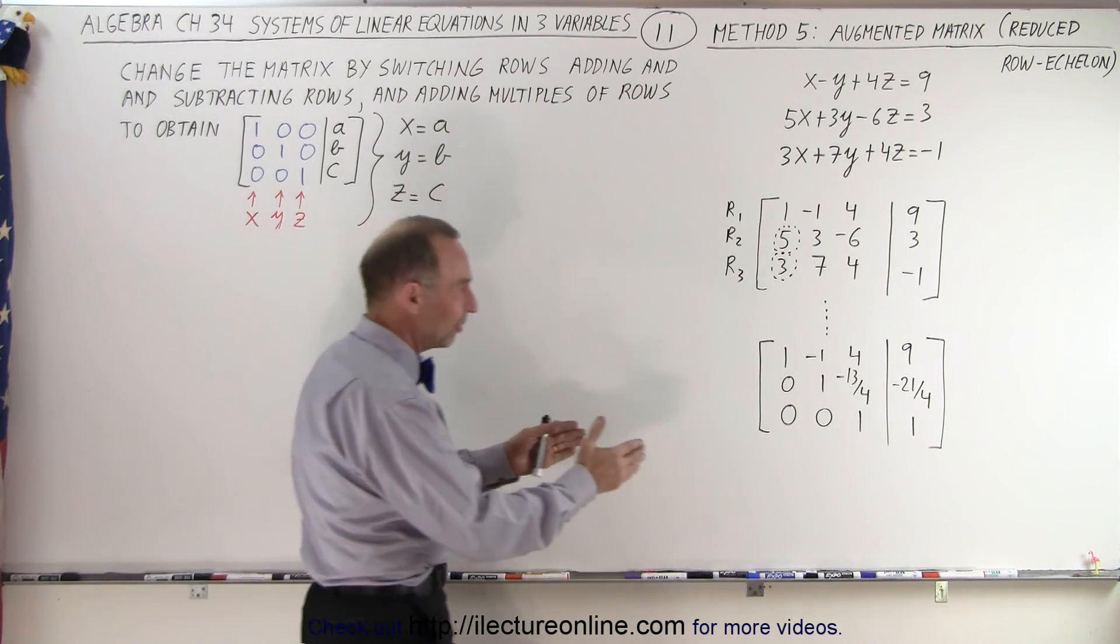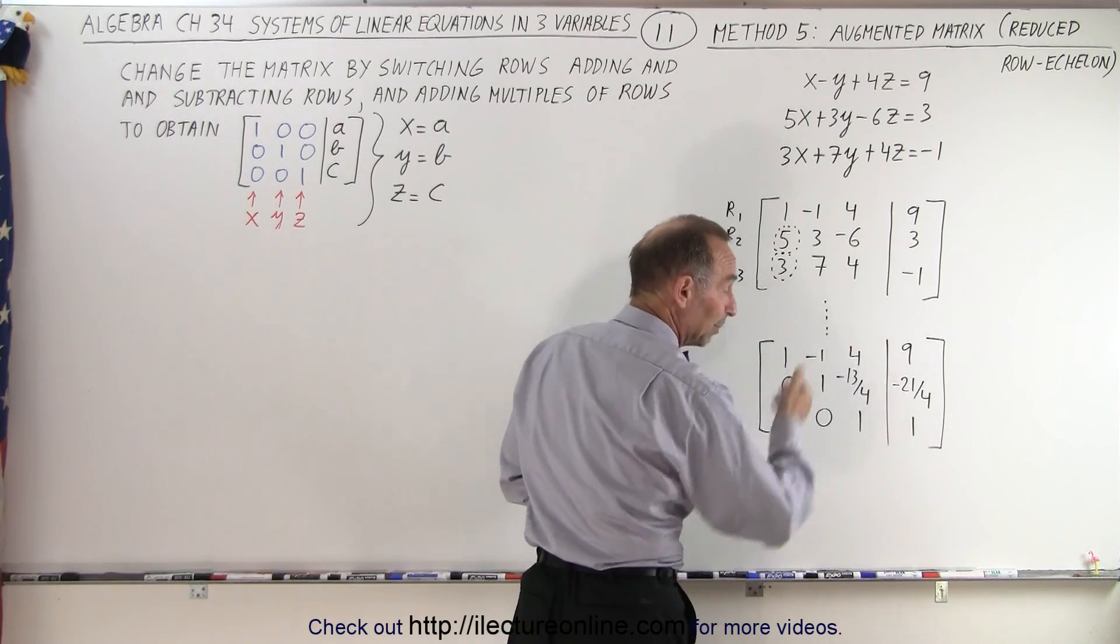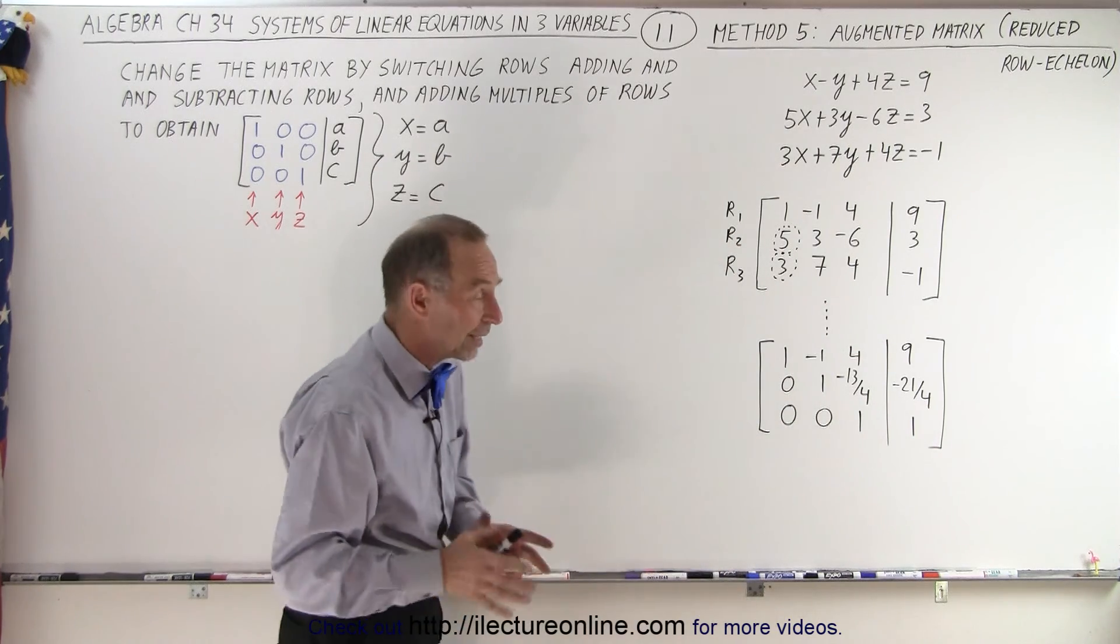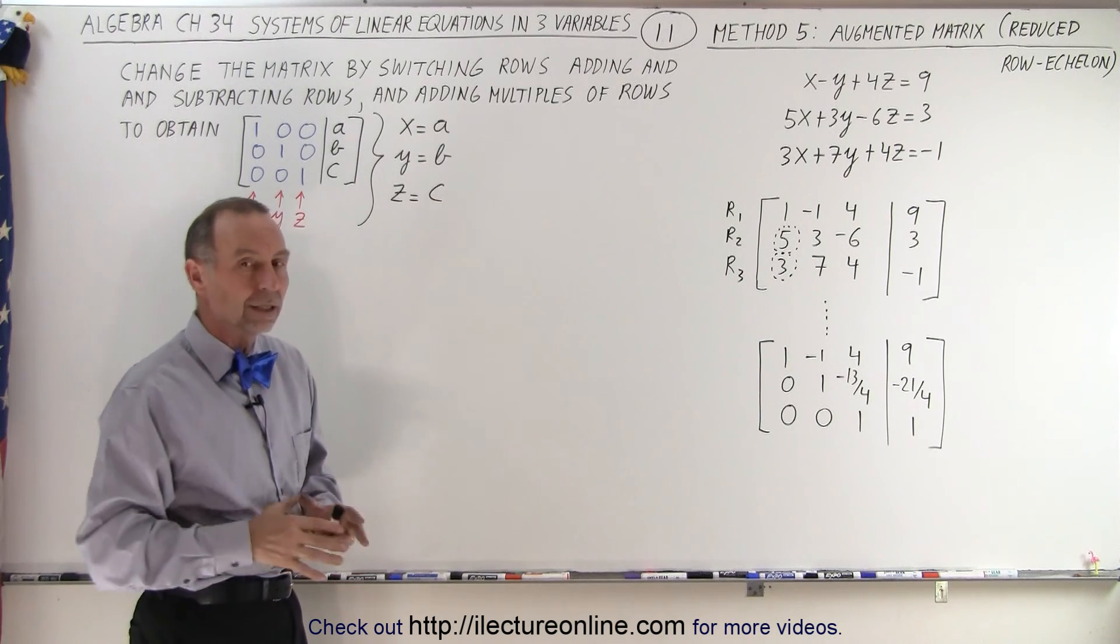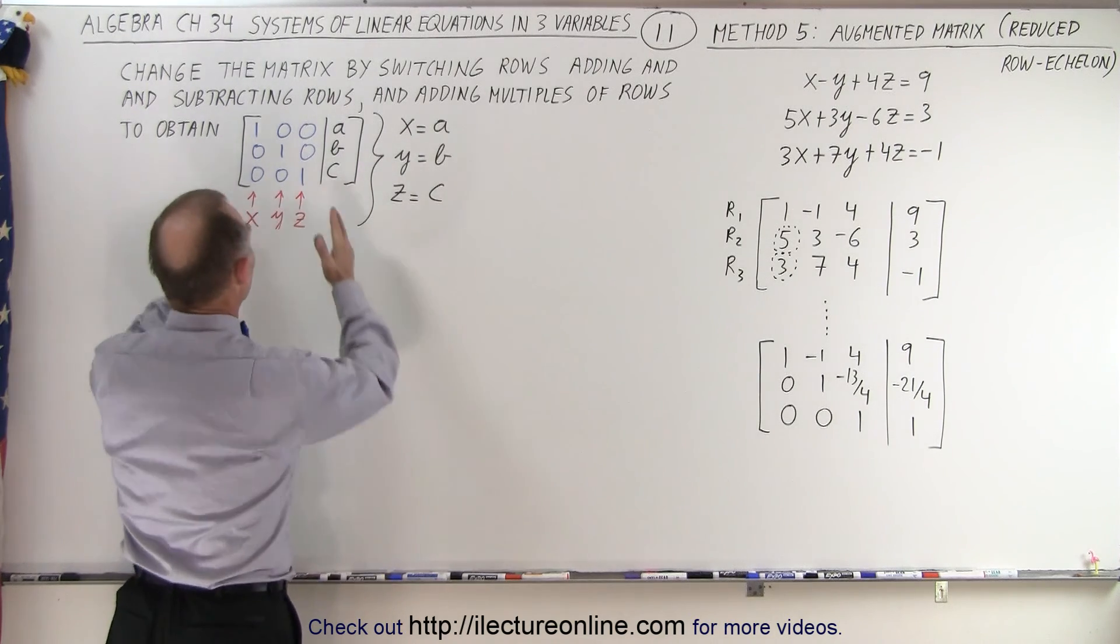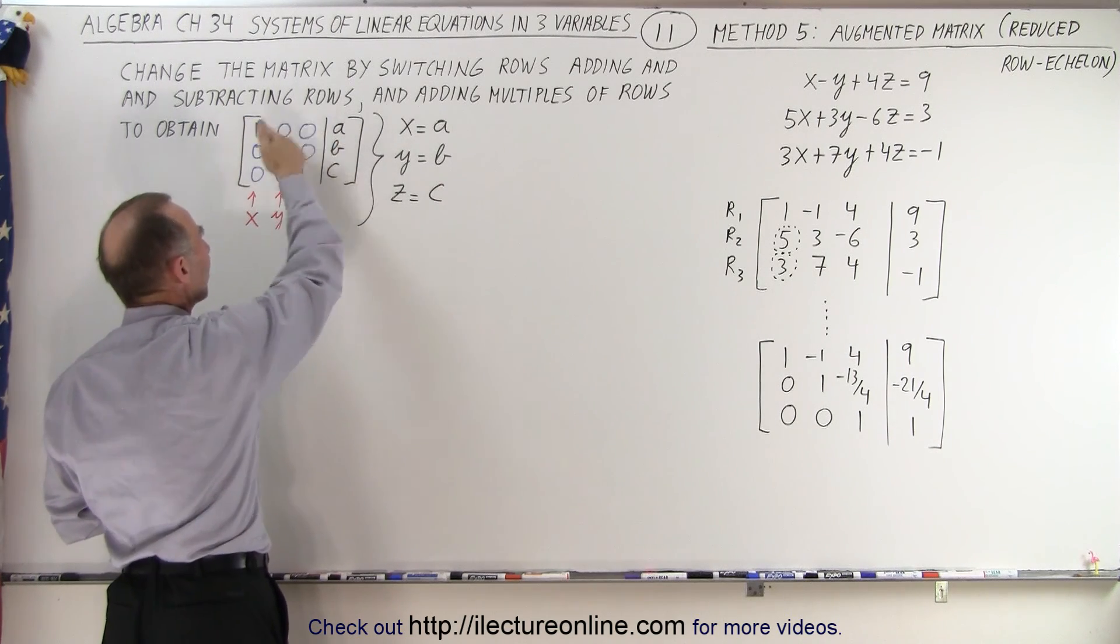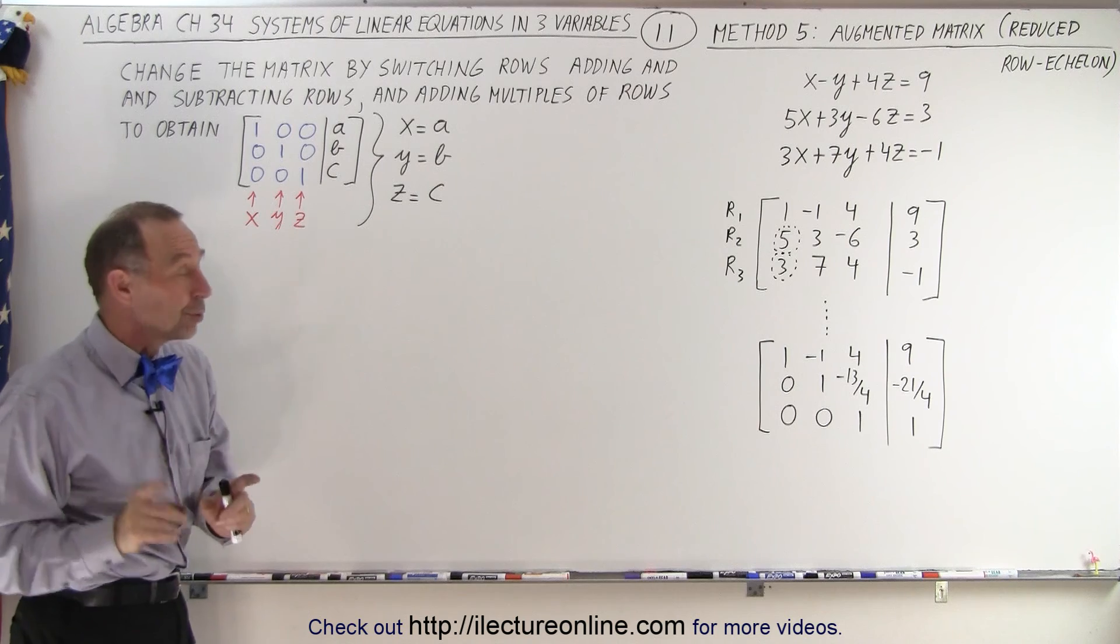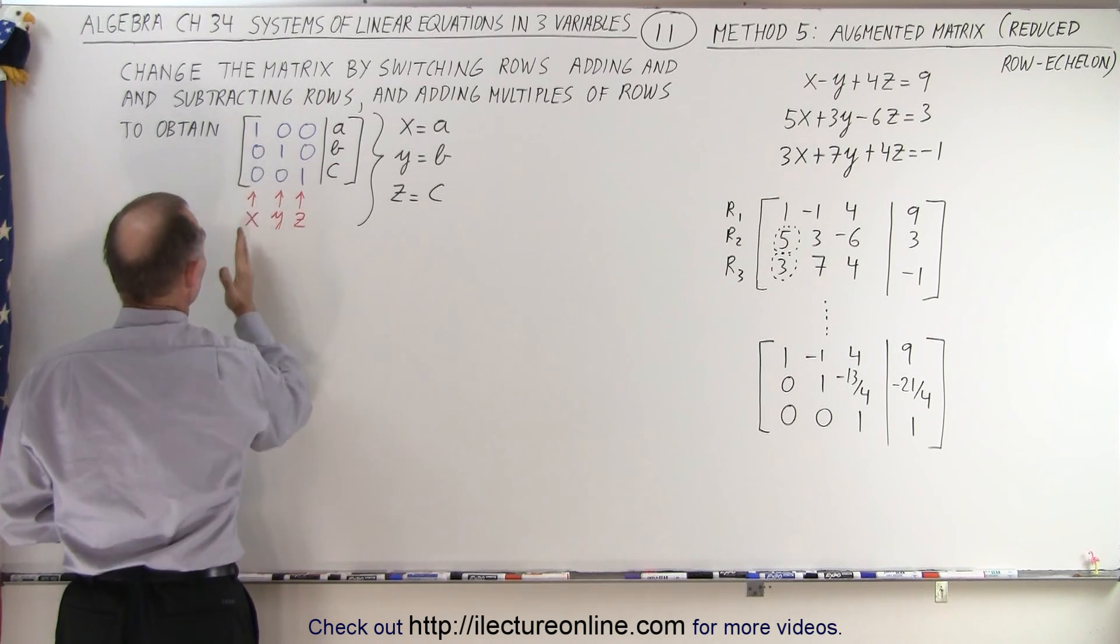But after you're ready this far, this is where we left off last time. Then we said z is equal to one, and we went backwards and found the values for y and x. We can actually continue reducing the row echelon form all the way until we have this form. So that means ones across diagonals and zeros everywhere else. When we do that, notice this is the z column, that's the y column, that's the x column.